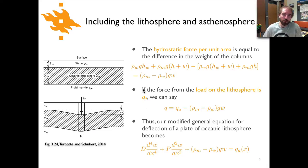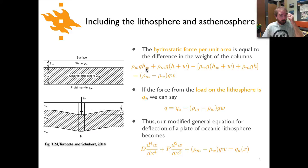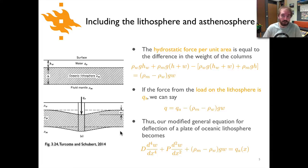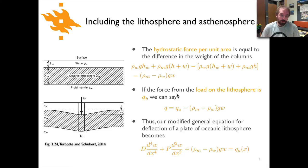We can say basically the same thing by doing this force calculation. Putting together the different terms: rho_water times g times H_W for the undeflected case, plus rho_M times g times (H + W) for the undeflected column, and then we subtract the weight of the deflected column. The difference comes down to (mantle density minus density of water) times g times the deflection W. So effectively we can modify our load because the net load acting in the middle is Q_A minus this restoring force.